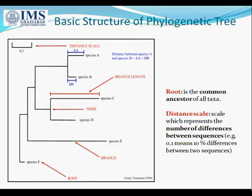This is the basic structure of a phylogenetic tree. Here we can see that species F is representing a root, this is a branch, this is a node where two different branches are bifurcating, and all these species A, B, C, D, and E are the leaves, that is, the different taxa.